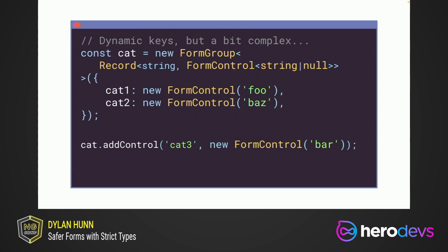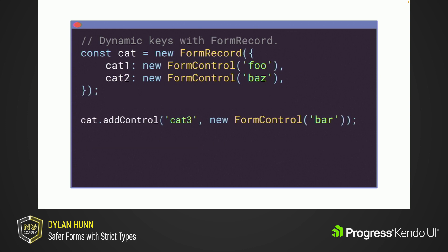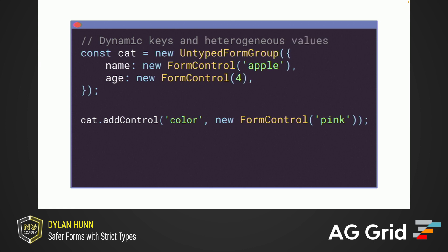By providing Record to the form group type parameter we can get exactly this behavior, but it's a little complex to type out. So with Angular 14, we've introduced a brand new type called FormRecord. FormRecord allows you to have open-ended dynamic form groups where all of the values are homogenous — no need for an explicit type, this is completely inferred. Of course, the last case is form groups that cannot be typed — where you don't know the keys ahead of time and all values are heterogeneous. In that case, you should fall back to UntypedFormGroup.